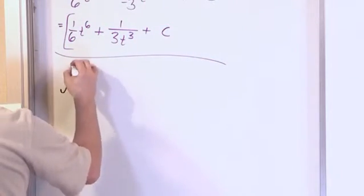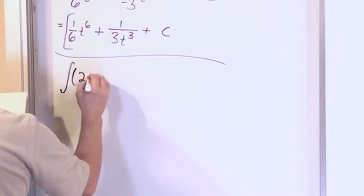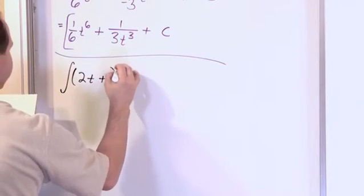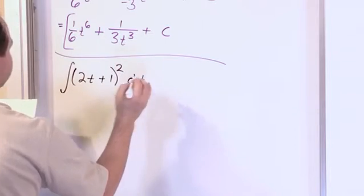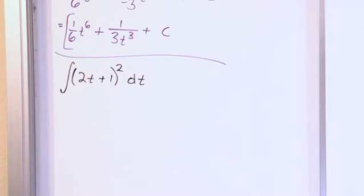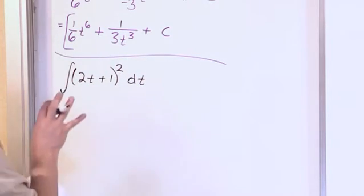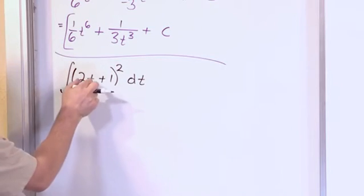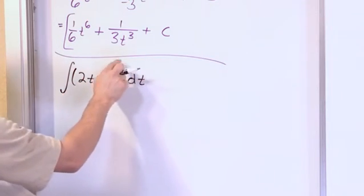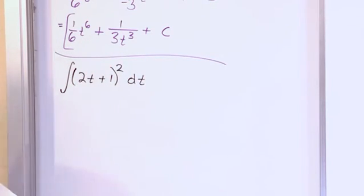All right, so what if you have something like 2t plus 1 quantity squared dt? How do you do this? Well, this looks nothing like what we've done before. Yes, we have 2t plus 1, but the whole quantity is squared, and that really changes the whole thing.